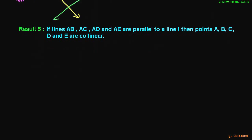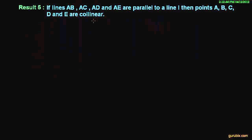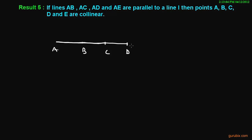The last result: if a line AB, and there is another line AC, and here is another line AD, and another line AE, and all these lines are parallel to another line L, then points A, B, C, D and E are collinear. You can see it here. So this is result number 5.